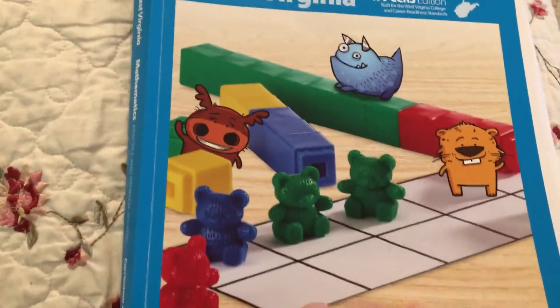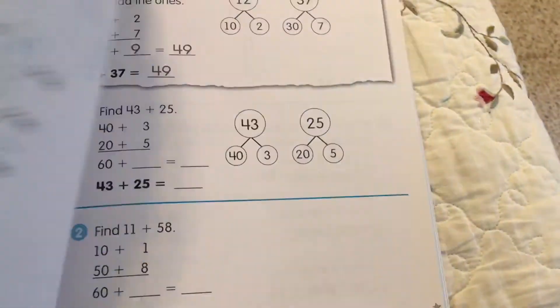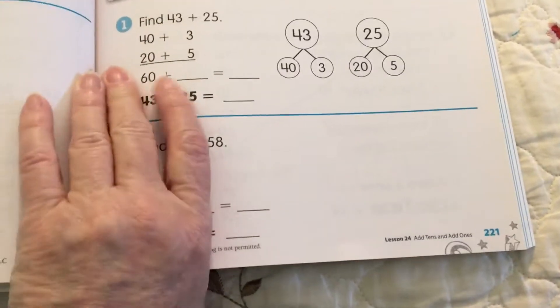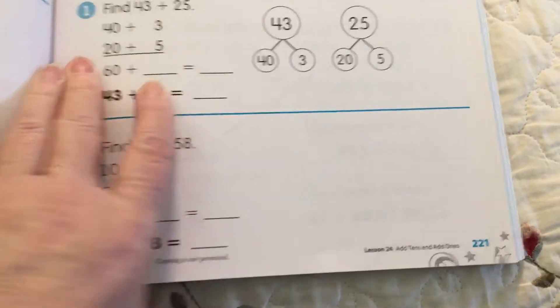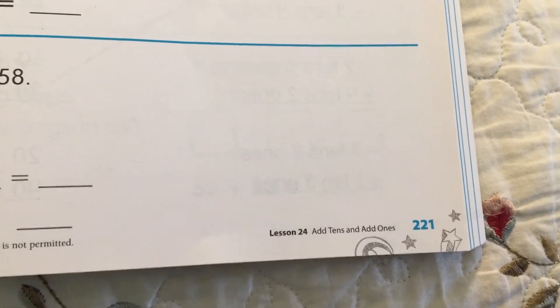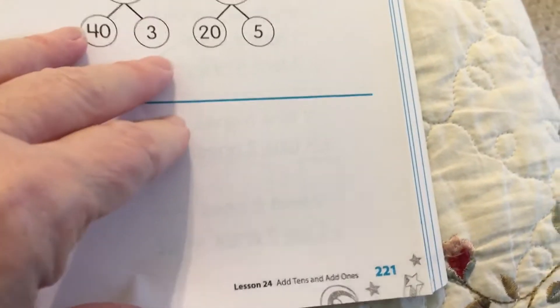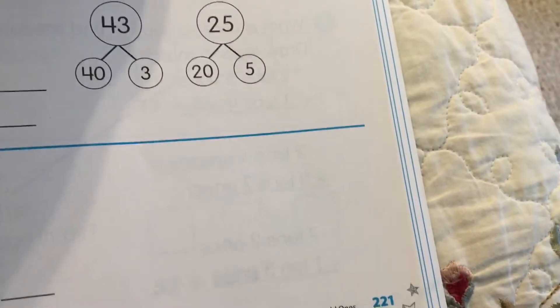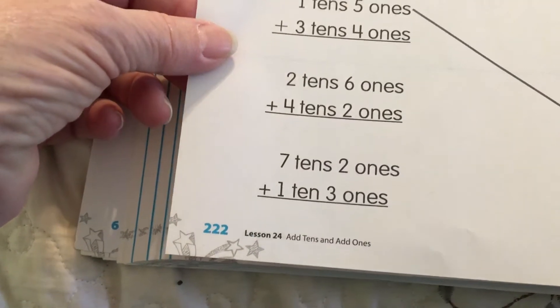Okay, we've got our teddy bear book. We're going to turn to our next page. This is your homework book. And we're looking at page 221. And you're going to be doing 221 and 222.